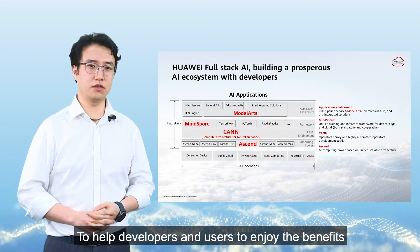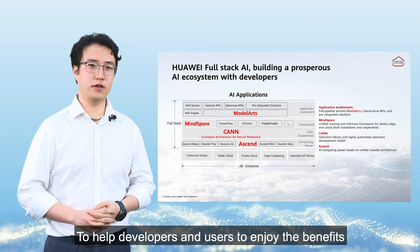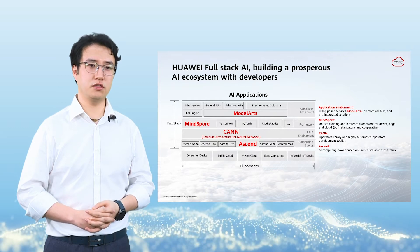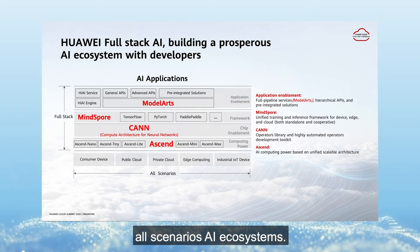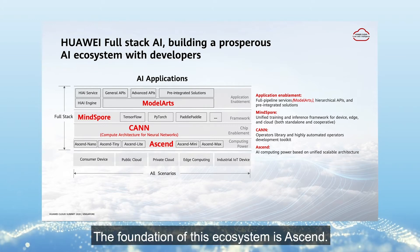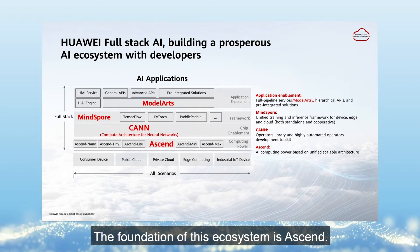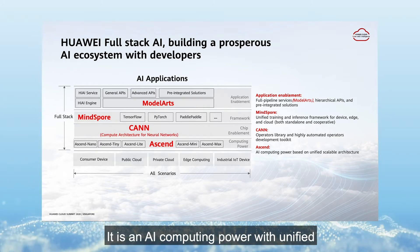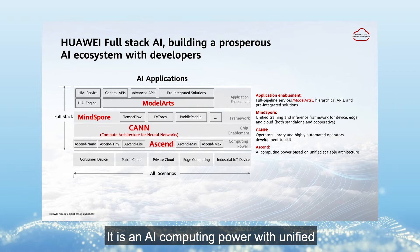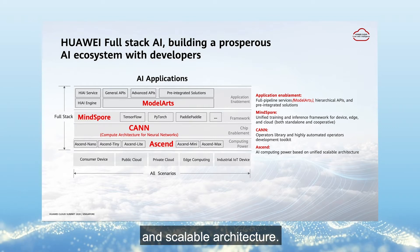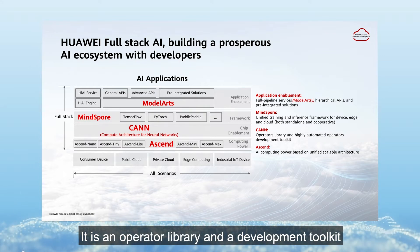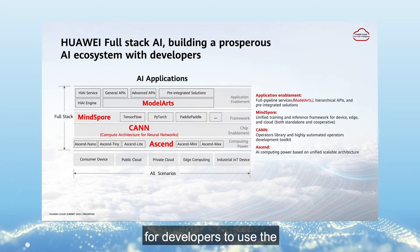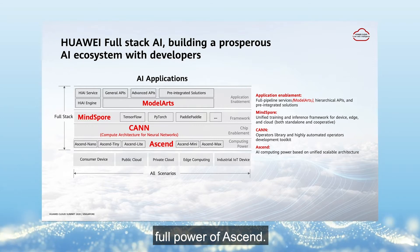To help developers and users enjoy the benefits of artificial intelligence, Huawei launches a full-stack, all-scenario AI ecosystem. The foundation of this ecosystem is SN, an AI computing power with unified and scalable architecture. The second level is CAM, which is an operator library and development toolkit for developers to use the full power of SN.